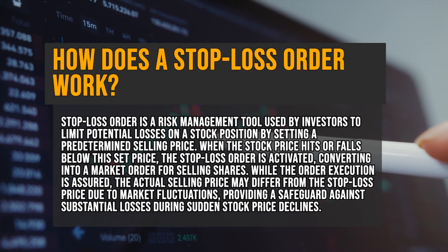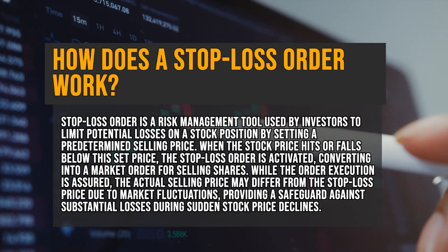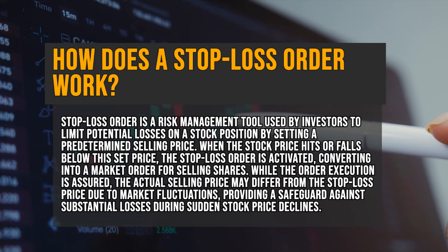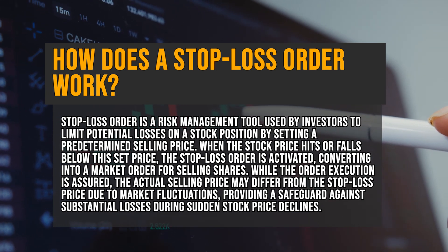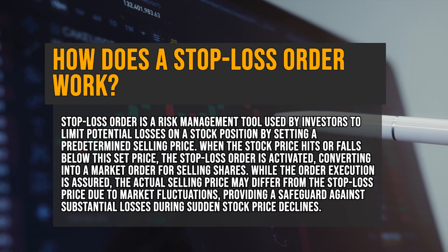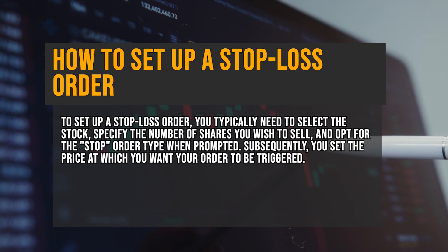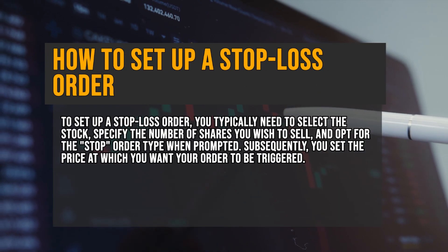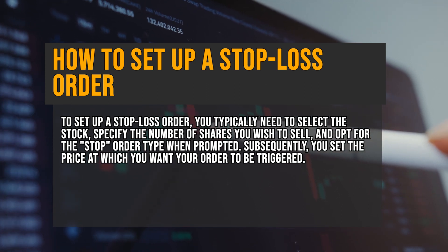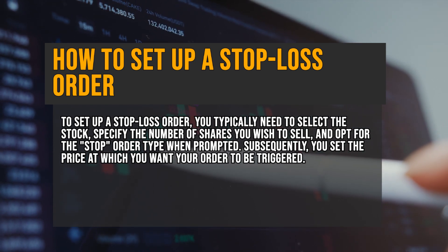While the execution of the order is guaranteed, the actual selling price may vary from your stop loss price due to market fluctuations. This mechanism helps protect investors from significant losses in case the stock price experiences a sudden decline. Setting up a stop loss order typically involves accessing your trading platform and selecting the stock you want to apply the stop loss to.